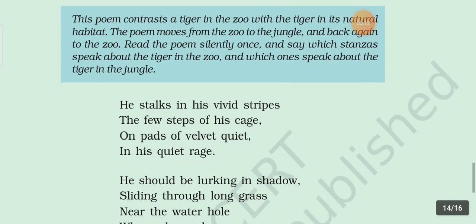Poetic devices: 'He stalks in his vivid strips, the few steps of his cage' — the first line doesn't have any punctuation, so enjambment figure of poetic devices is used here. The poem has been completed by me, and now it's your turn to read and prepare it. Thank you.